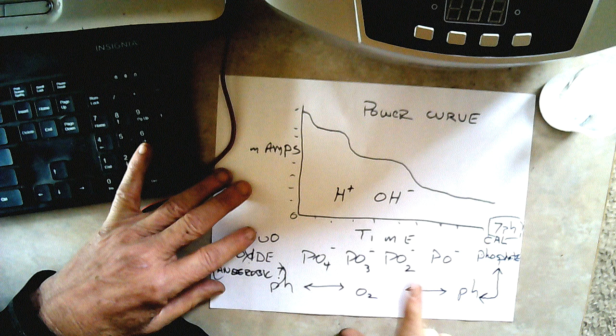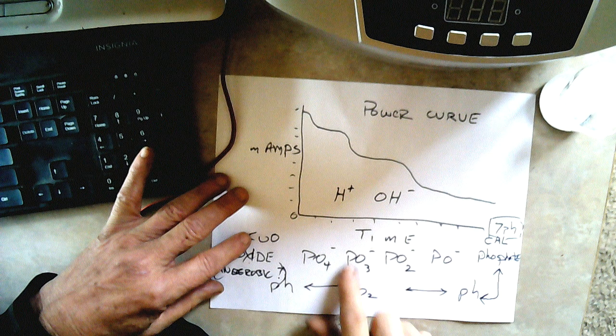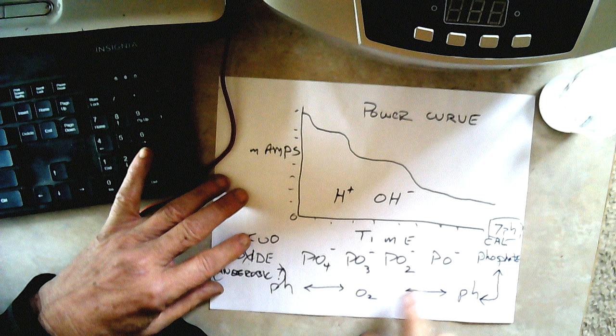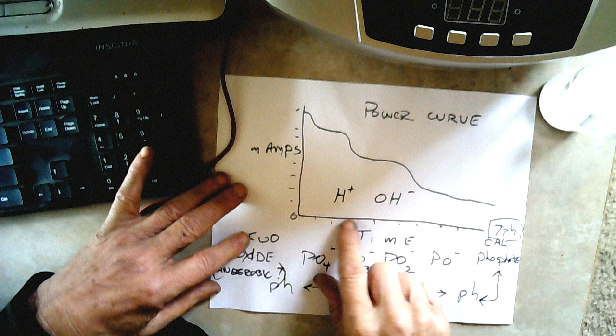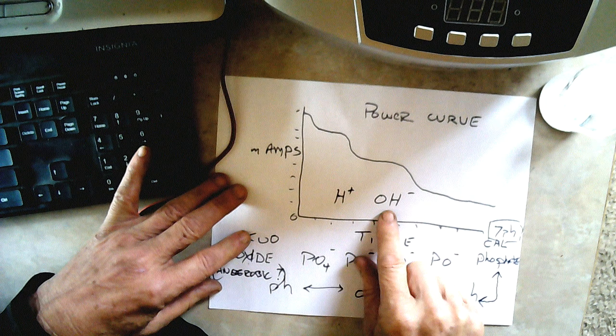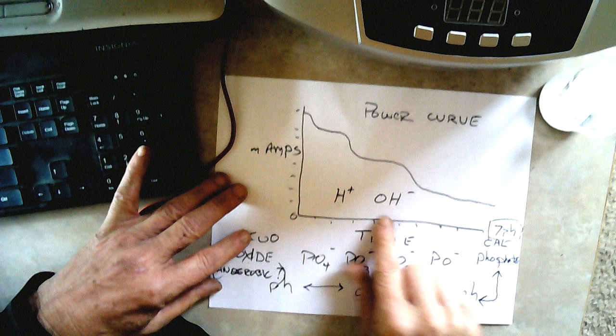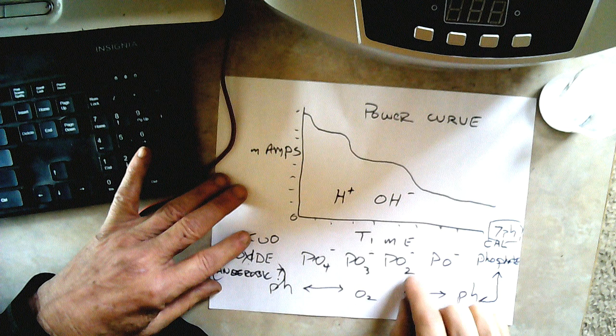So the oxygen is getting shuttled around inside the cell. And the hydrogen and hydroxyl ions from splitting water are just intermediates to shuffle this oxygen around.